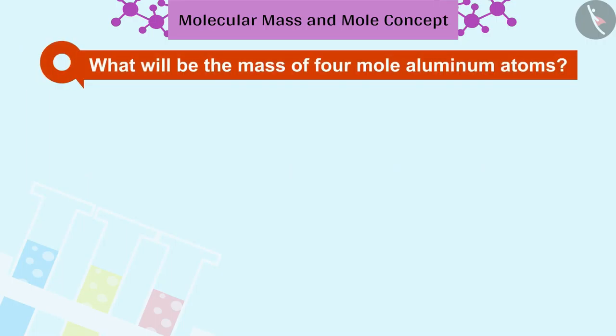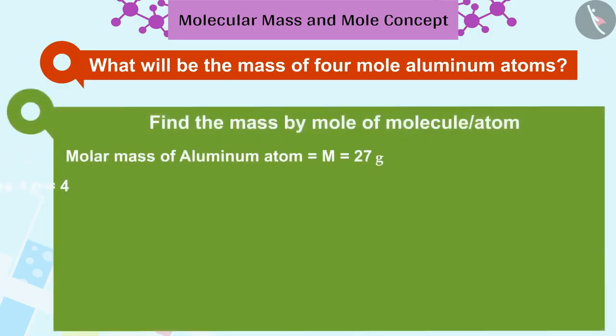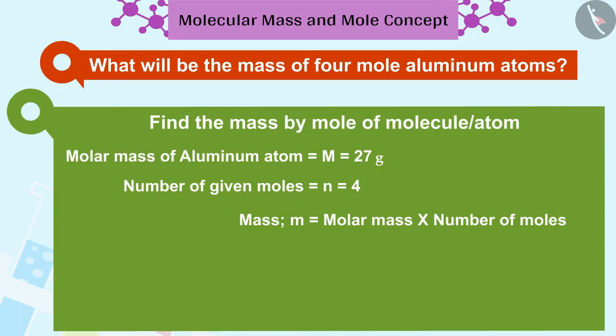Let's see what will be the mass of 4 mole aluminum atoms. To find this, we will multiply the molar mass of the aluminum atom by the number of moles. In this way, the mass of 4 mole aluminum atoms is 108 grams.